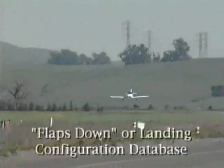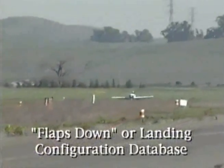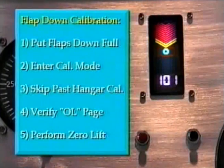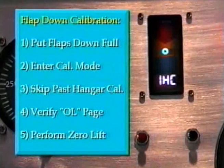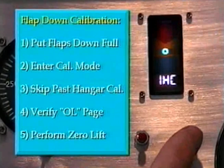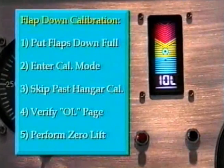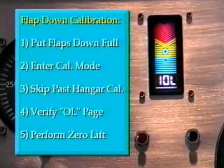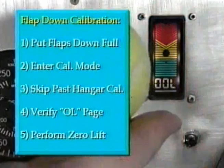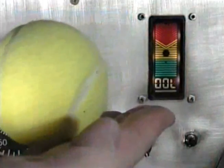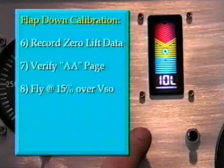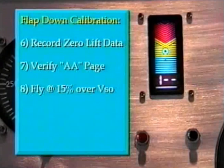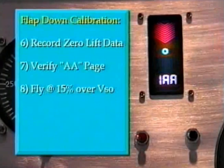Now let's build the flaps-down or landing configuration database. Position the flaps to down, get into the calibration mode, skip over the hangar calibration page, verify you are on the zero lift page, perform the zero lift maneuver, and push and release the record button as you are weightless.